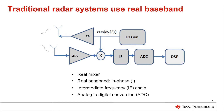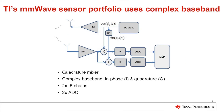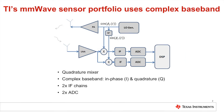TI's millimeter wave sensor portfolio is also based on the FMCW technique but adopts the complex baseband architecture. This implementation uses quadrature mixers with complex baseband IF and ADC chains that include both in-phase and quadrature channels, commonly known as the IQ architecture.